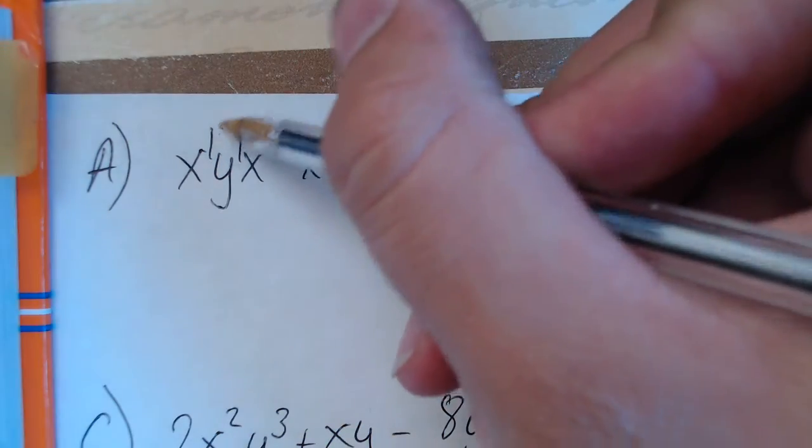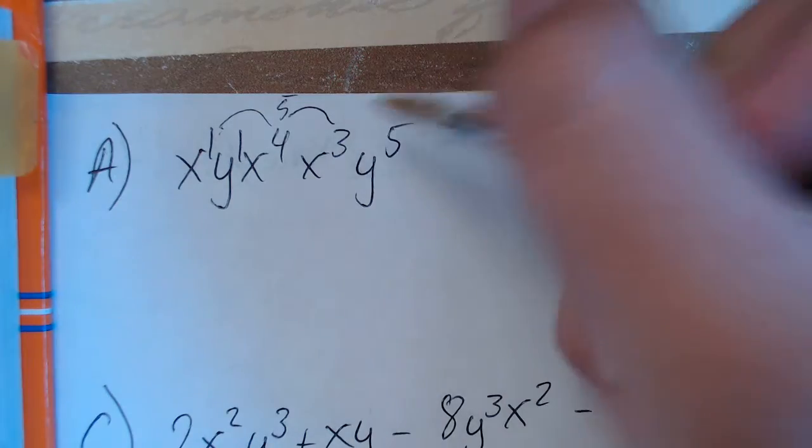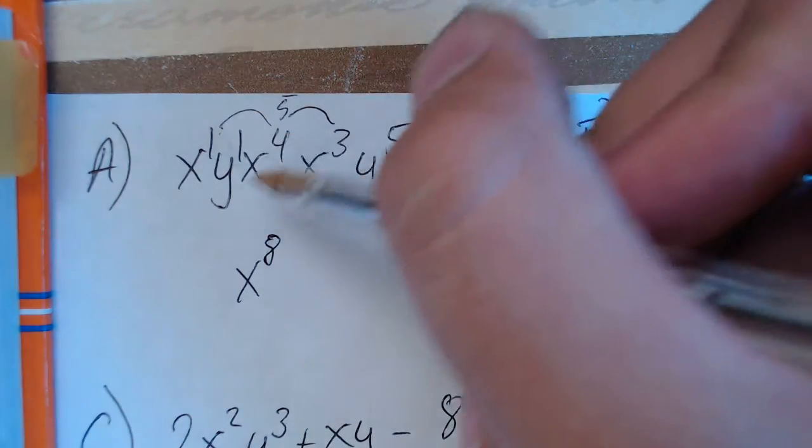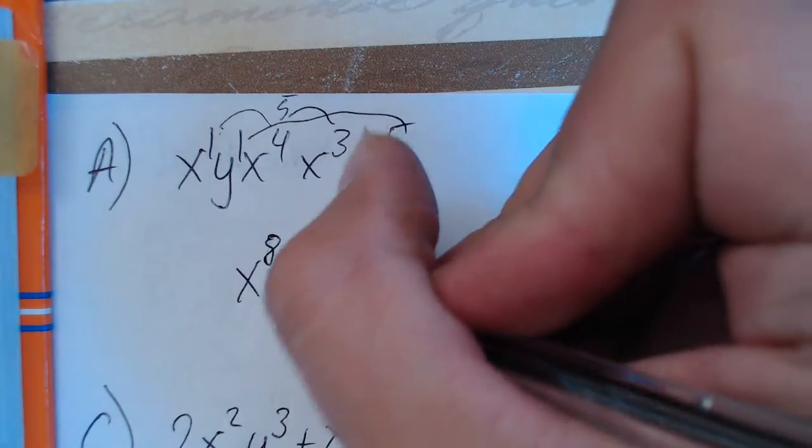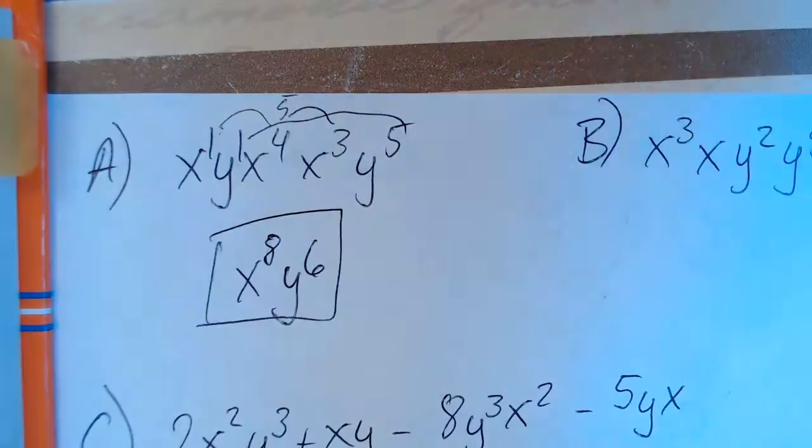So adding the x's, 1 and 4 is 5, 5 and 3 is 8. So our answer is going to give us x to the 8, and now we have to add the y's. So 1 and 5 is 6, so we have y to the 6. x to the power of 8, y to the power of 6, that is our answer.